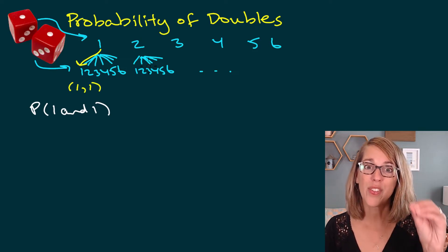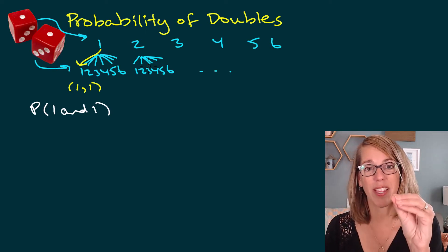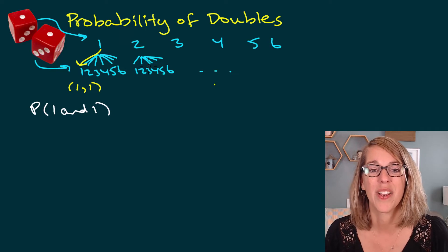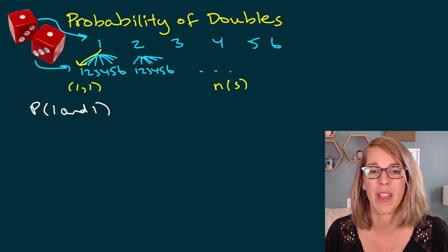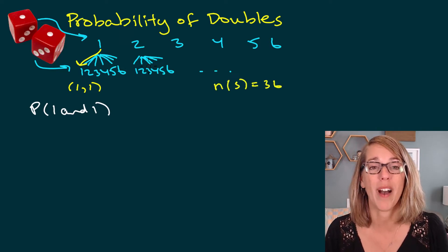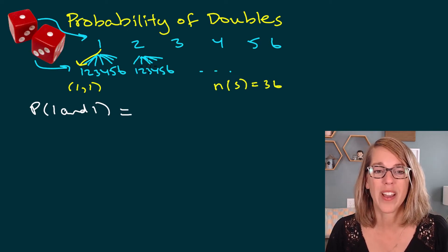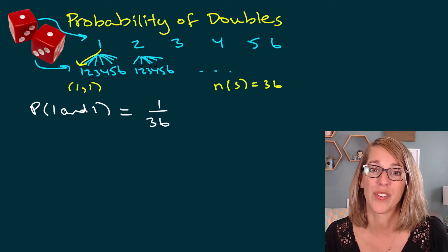There are 36 of these branches. Six ways for the first dice times six ways for the second dice means that the number in that sample space or the total possible outcomes is 36. So a one and a one can only happen one way out of those total 36.